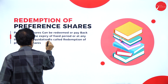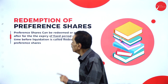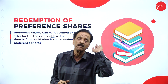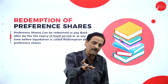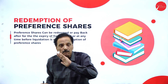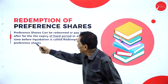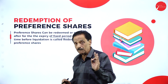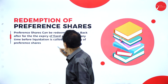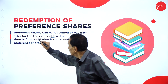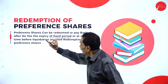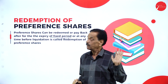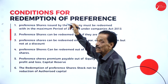Redemption of preference shares means the shares will be redeemed — paid back — after the expiry of the stipulated time. The stipulated period may be four years, five years, ten years, or fifteen years. As per the Companies Act, the maximum period allowed is twenty years. Redemption before liquidation, after expiry of the fixed period, is called redemption of preference shares.